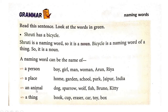An animal — dog, sparrow, wolf, fish, Bruno, Kitty. Bruno is the name of a dog and Kitty is the name of a cat. So these all are naming words.